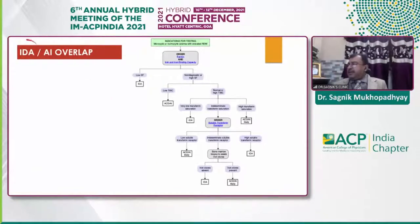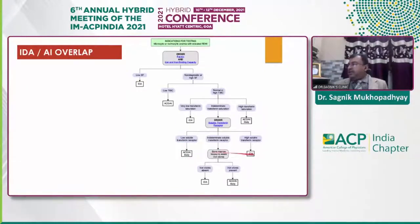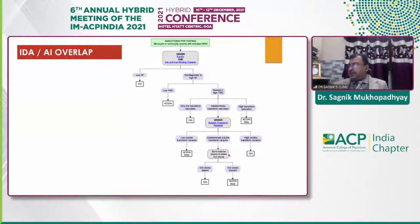How to differentiate anemia of inflammation from anemia of iron deficiency when they sometimes overlap: we perform serum soluble transferrin receptor measurement. For patients with low soluble transferrin receptor, that indicates anemia of chronic disease or inflammation. For those with high soluble transferrin receptor, that indicates iron deficiency anemia. For those with indeterminate results, the only way to diagnose the cause is bone marrow examination using Prussian blue stain. If iron stores are absent, we diagnose iron deficiency anemia; if iron stores are plentiful, anemia of chronic disease is the most common cause.